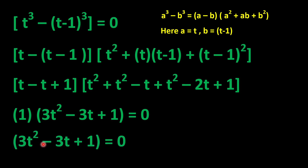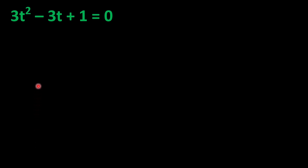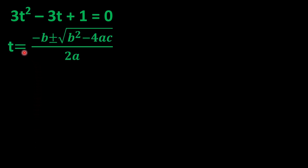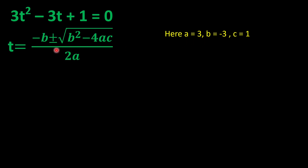This gives us the quadratic equation 3t^2 - 3t + 1 = 0. We apply the quadratic formula: t = (-b ± √(b^2 - 4ac)) / 2a. Here a = 3, b = -3, and c = 1.